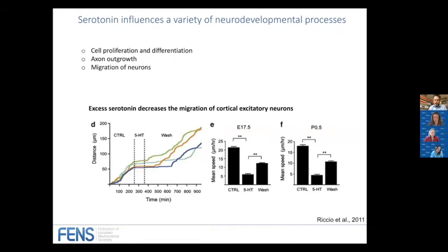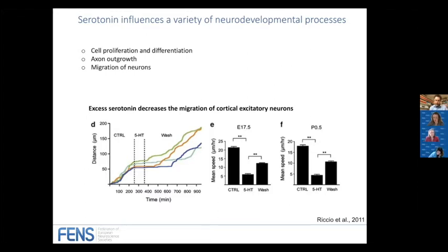Here is one example from an article published in Molecular Psychiatry in 2011. Researchers grew excitatory neurons that were migrating in a dish, and when they applied serotonin, they found that migration was stopped. When they washed away the serotonin, migration continued. Both at embryonic day 0.5 and postnatal day 0.5, the mean speed of migration of cortical excitatory neurons is strongly regulated by serotonin. If serotonin levels are increased in early life, this can affect the migration speed of cortical excitatory neurons and later affect behaviors dependent on those neurons.